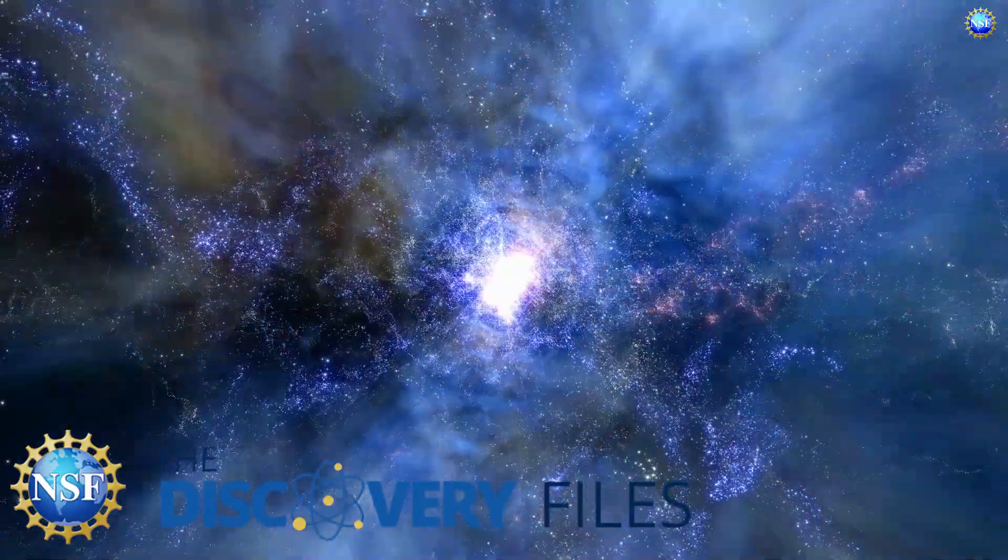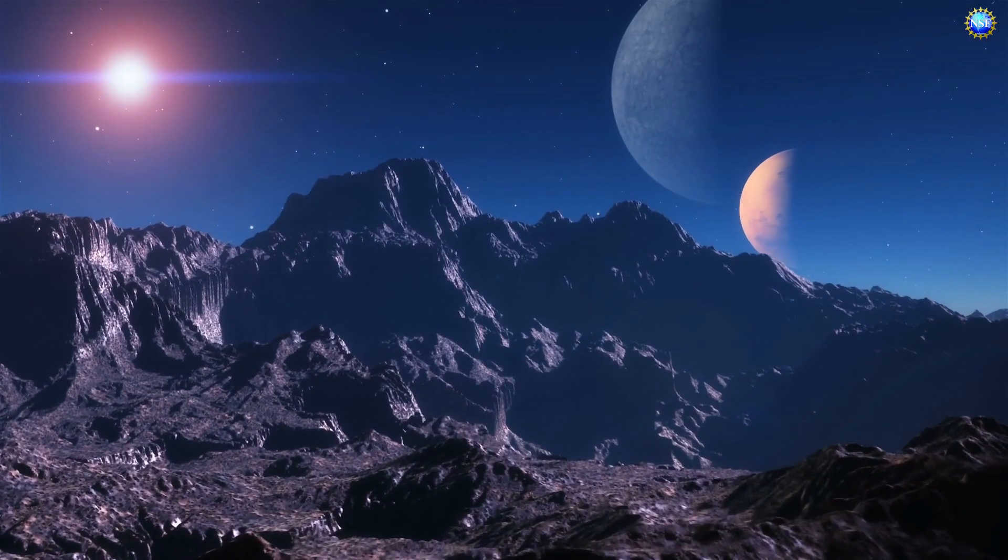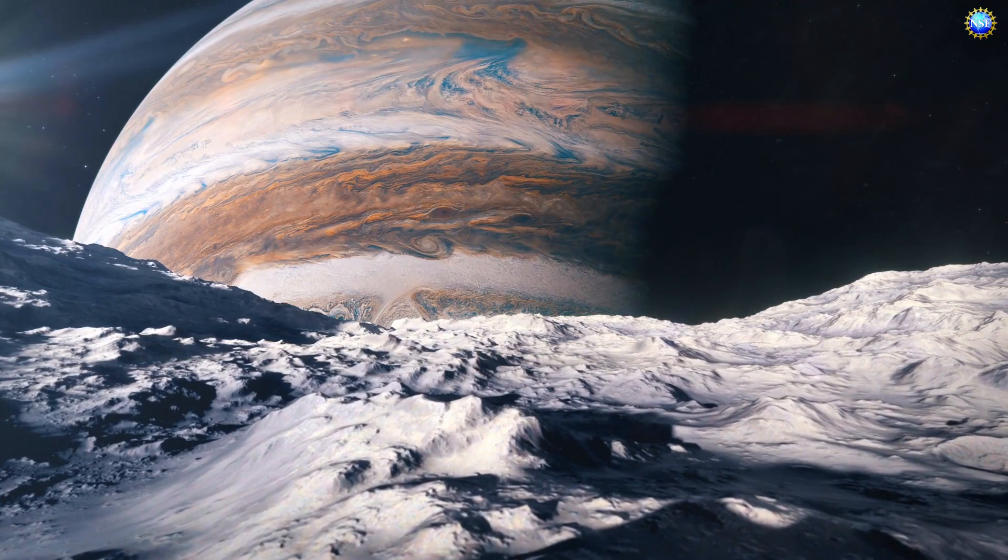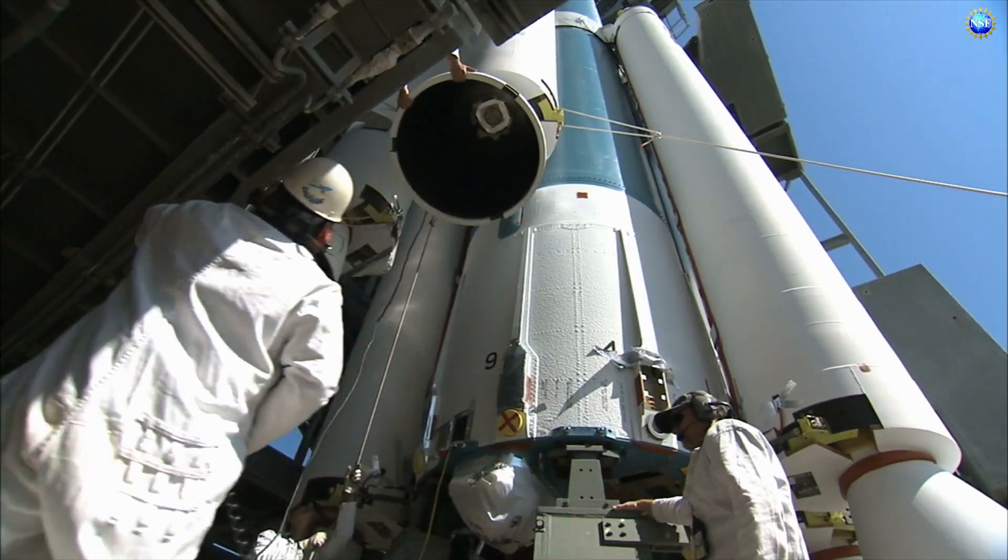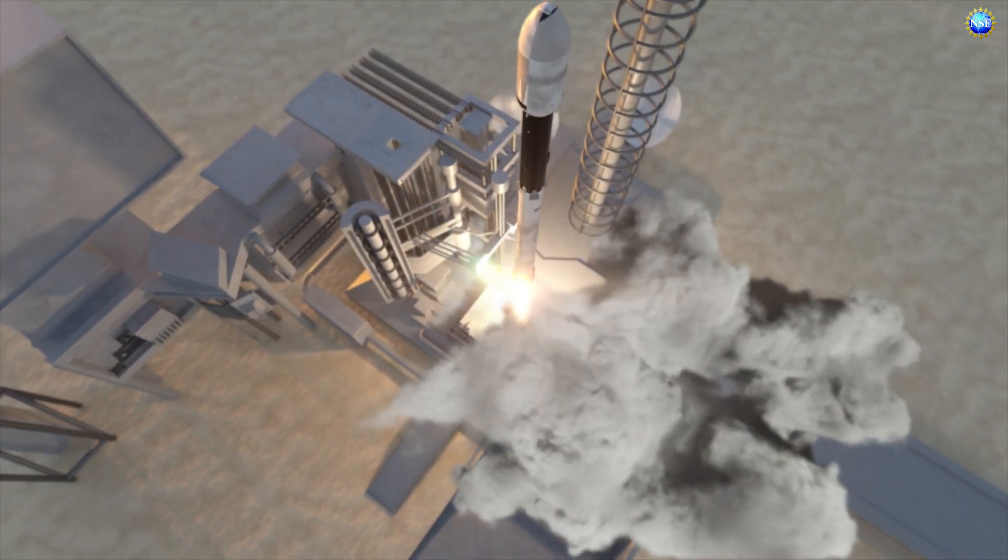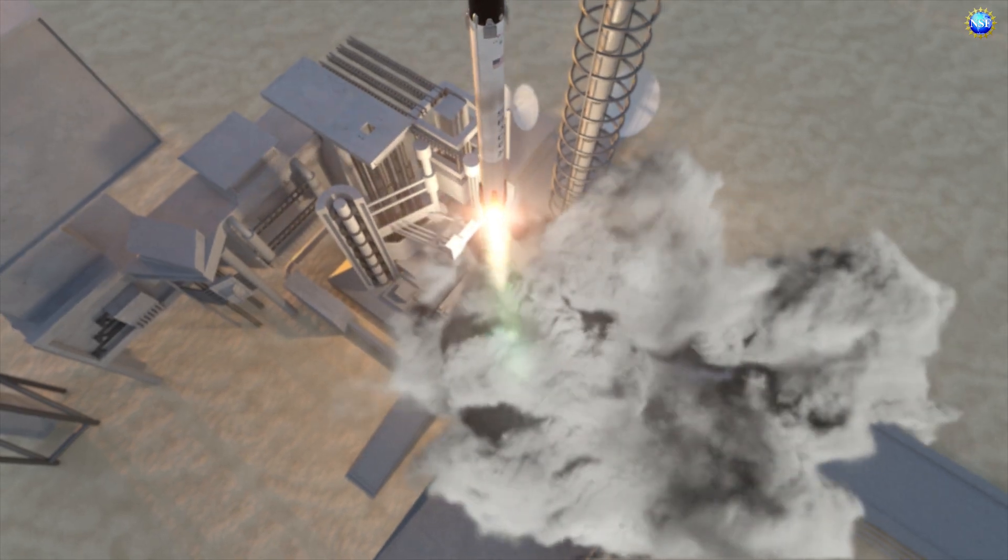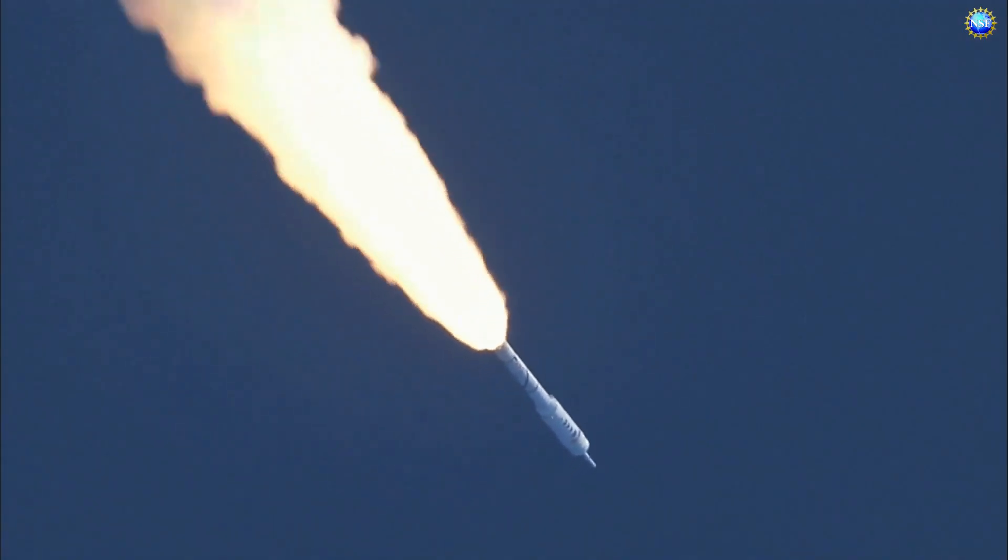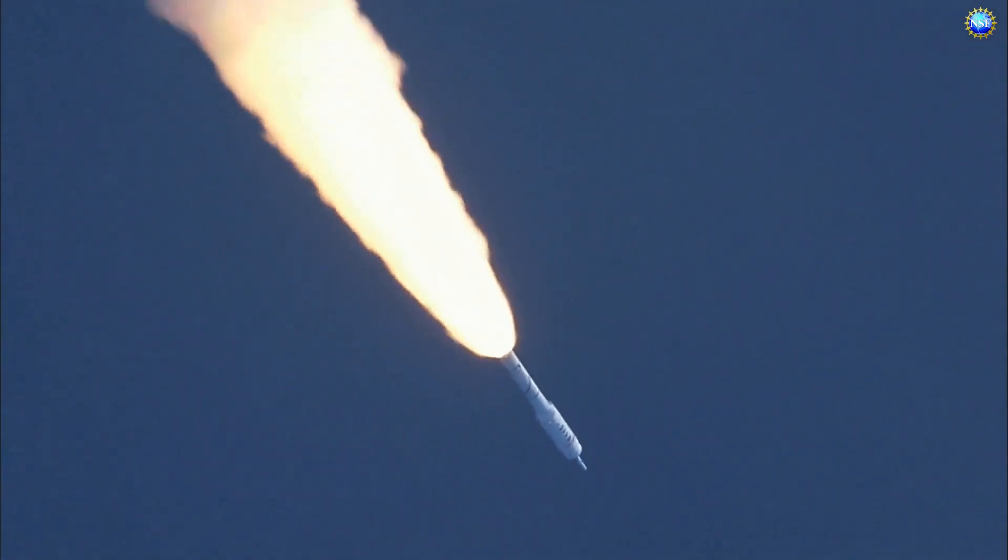As travel to other worlds transitions from science fiction to science possible, using local materials from those planets will be vital. In 2018, it cost an estimated $54,000 for a single kilogram to be taken into orbit. Anything that could be made on a planet or in space would make the journey much more feasible.